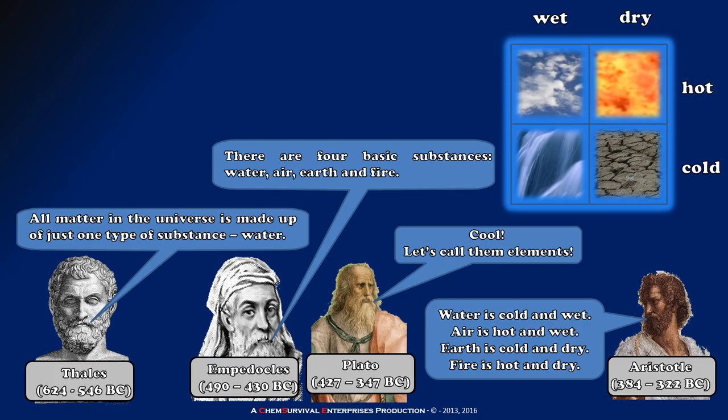Now, this is a far cry from the modern periodic table, but it may very well be the first attempt to organize elemental substances spatially based on their properties. And we'll soon see how this is relevant to the construction of the modern periodic table. But to do that, we're going to have to jump ahead nearly 2,000 years, just about up to the time of the Industrial Revolution.